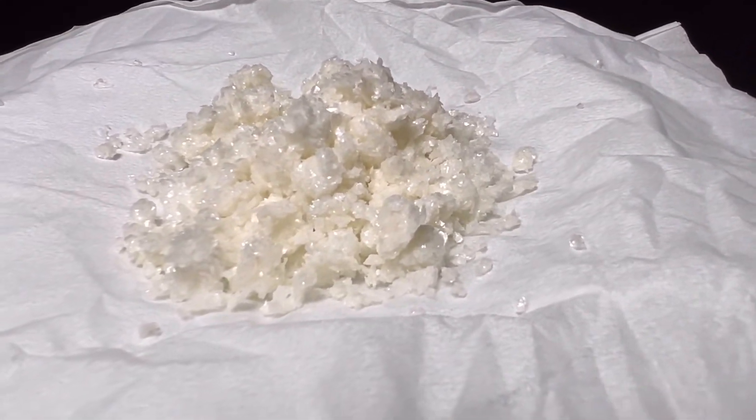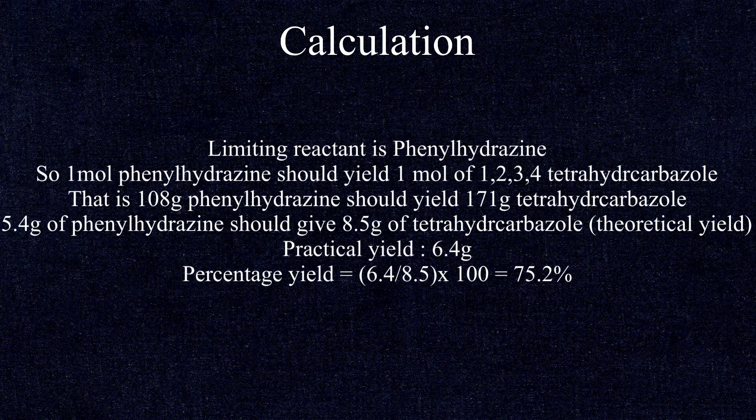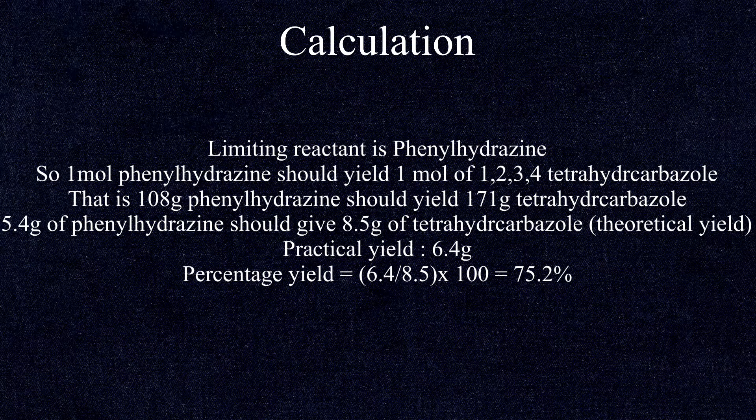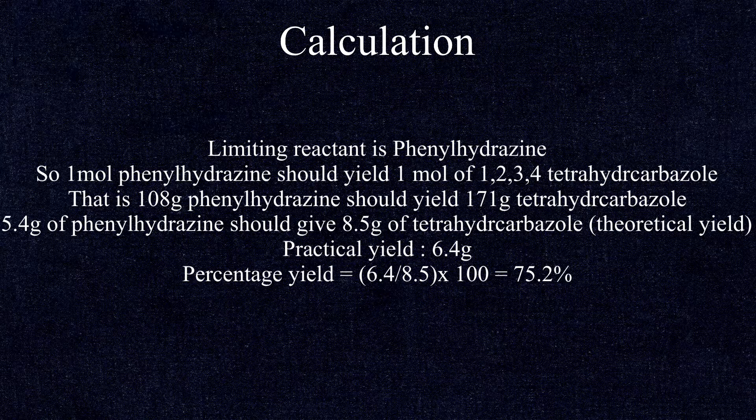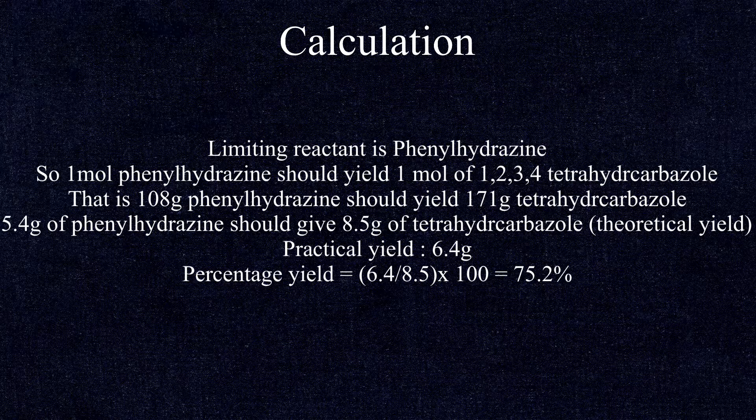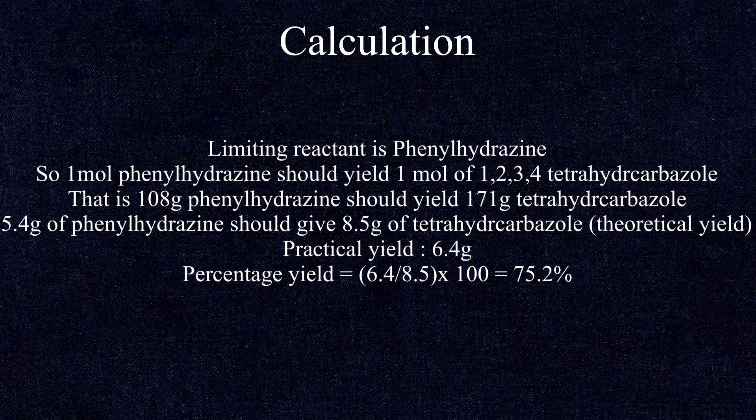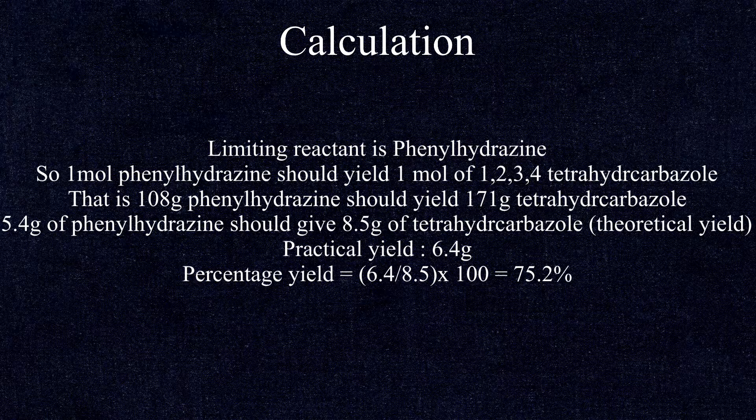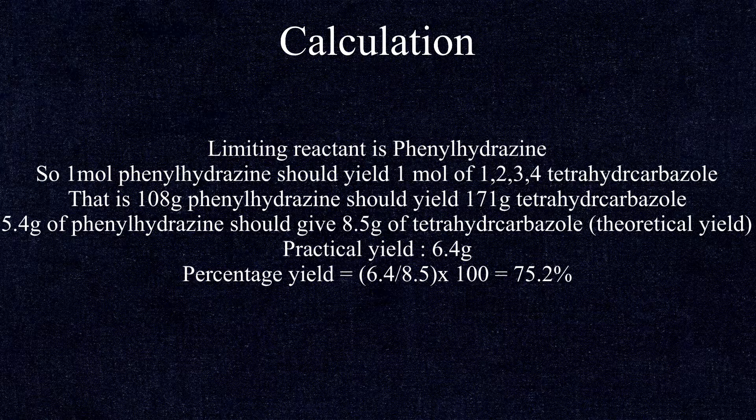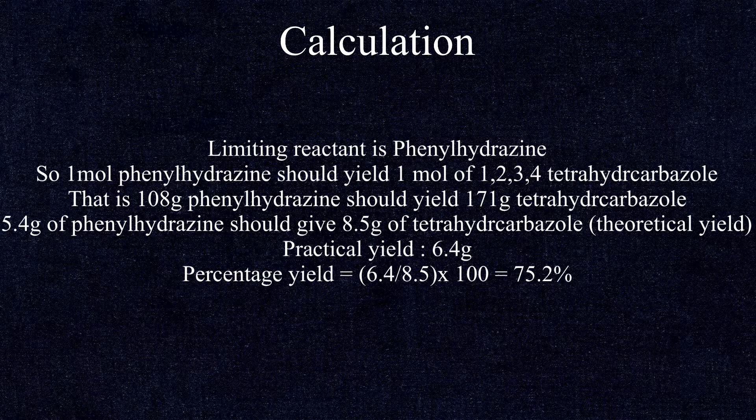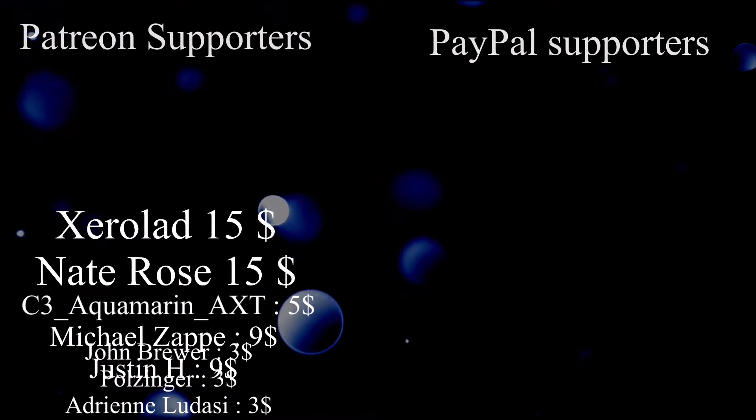Now let us go to the calculation part. Here the limiting reactant is phenylhydrazine. So 1 mol of phenylhydrazine that is 108 grams should give 1 mol of tetrahydrocarbazole that is 171 grams of 1,2,3,4-tetrahydrocarbazole. Then 5.4 grams of phenylhydrazine should give theoretically 8.5 grams of the tetrahydrocarbazole. That is the theoretical yield. The practical yield is the yield that we obtained and that is 6.4 grams. So the percentage yield is 6.4 divided by 8.5 into 100 and that is 75.2%.